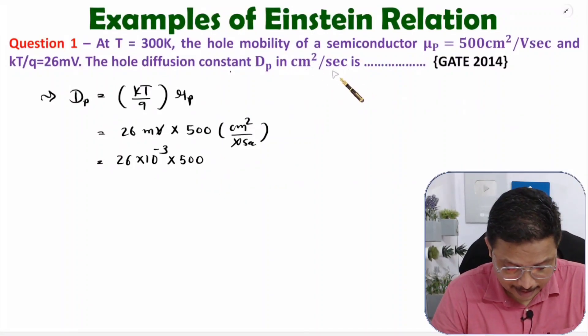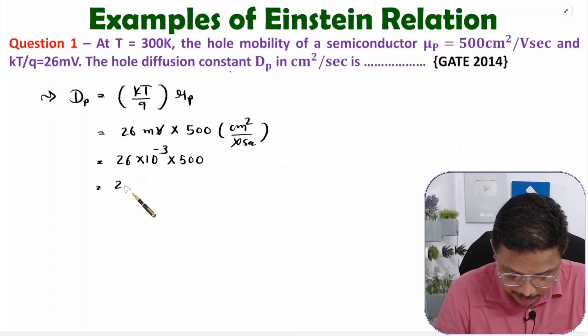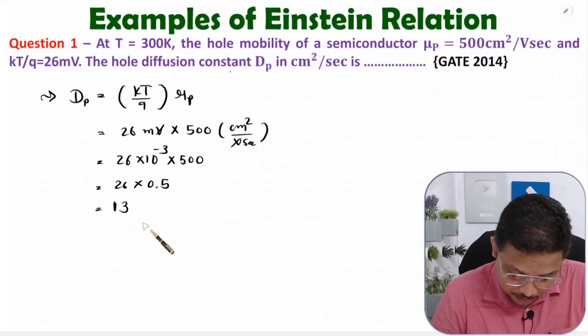So 26 × 10⁻³ × 500. That is 26 × 0.5, and 26 divided by 2 is 13. So 13 cm²/s - that is your answer.